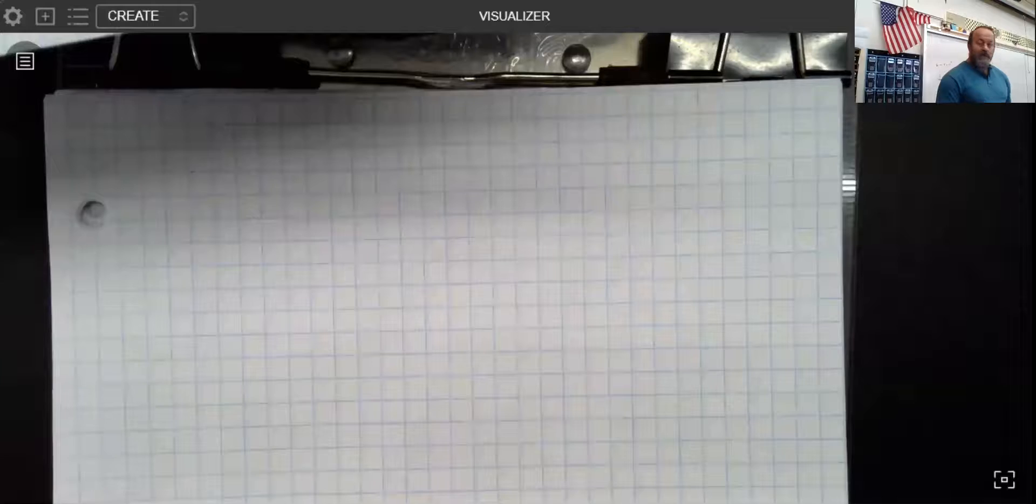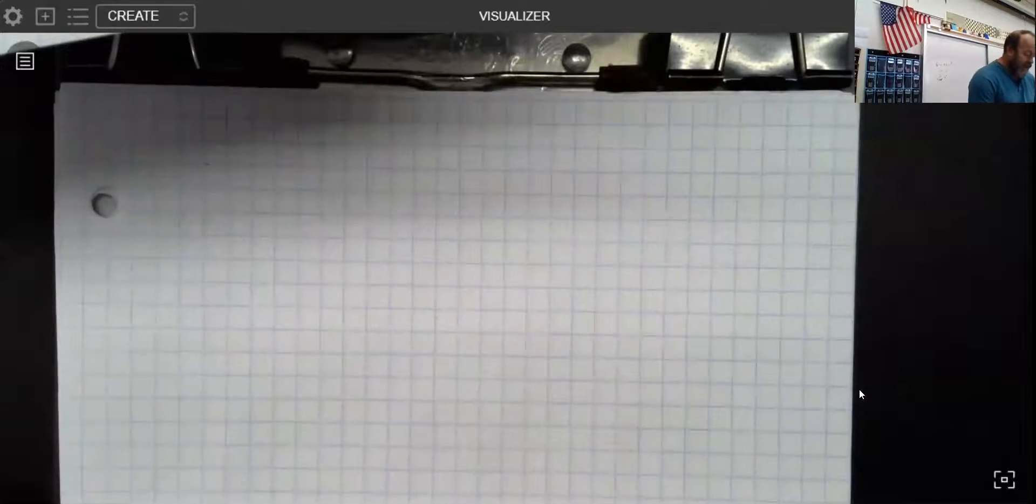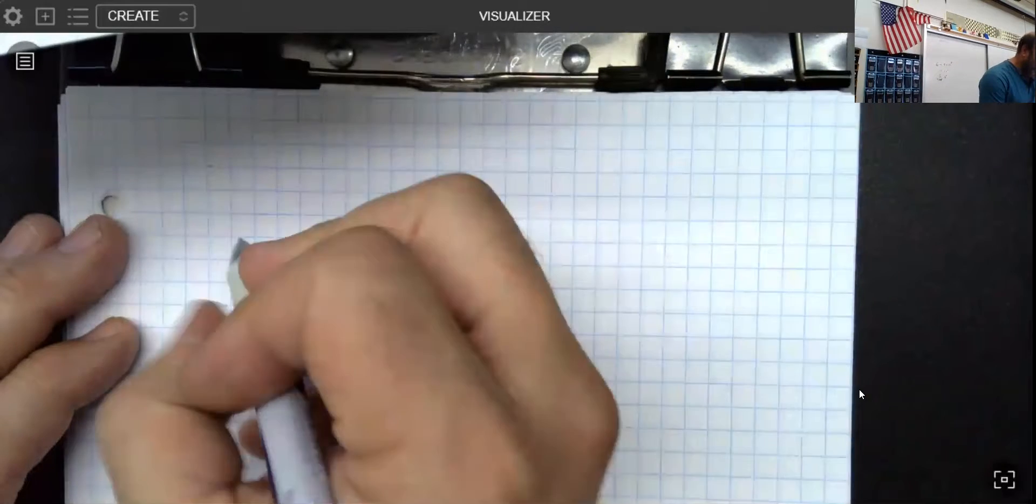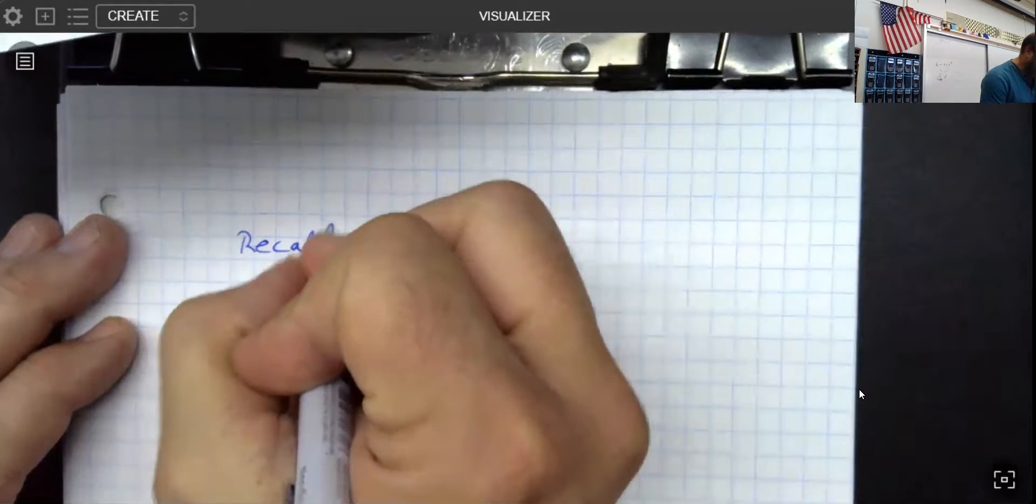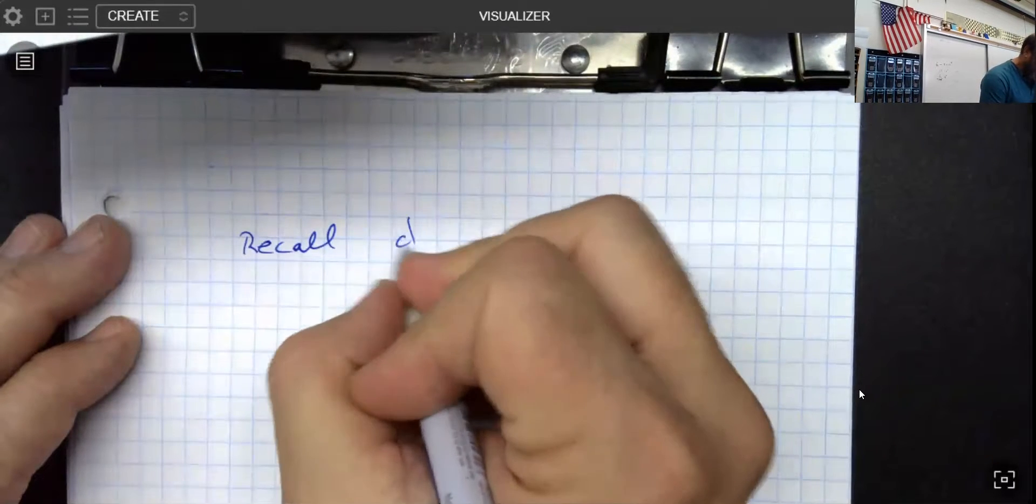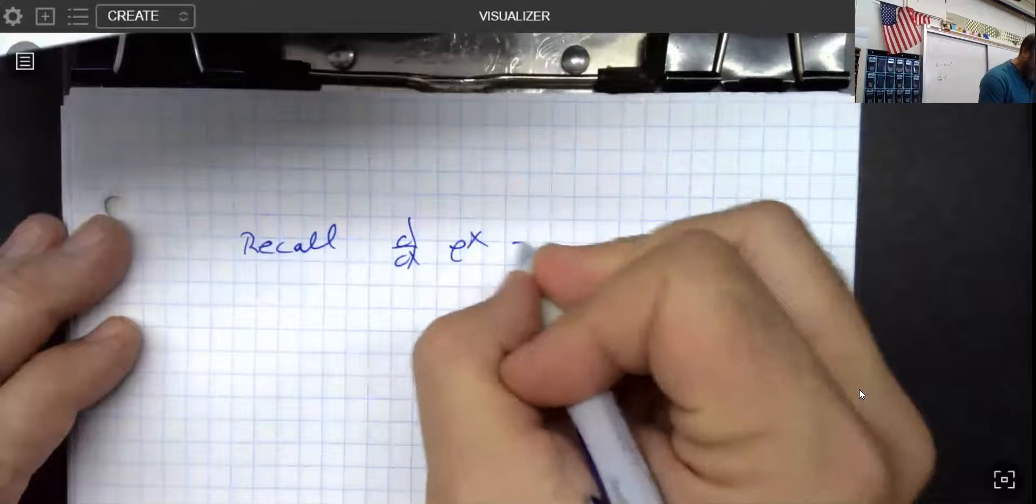We're going to take a look at some derivatives of exponentials, and in this particular video I want to focus on things that are base e, so we're not dealing with that extra little nugget that we talked about in class. I'm going to try to keep this one fairly short. I want to start by just reminding you that when you're dealing with a derivative of an exponential, recall that the derivative of e to the x is e to the x.